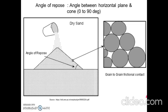Here in this figure, you can see that the dry sand is poured on a horizontal surface. When it is poured, it will try to occupy the shape in the form of a cone. The angle between this horizontal surface and the inclination is referred to as the angle of repose. This angle of the cone varies between 0 to 90 degrees, and the grains are aligned along this inclined plane due to frictional contact. There exists grain-to-grain frictional contact between all the particles of the sand.